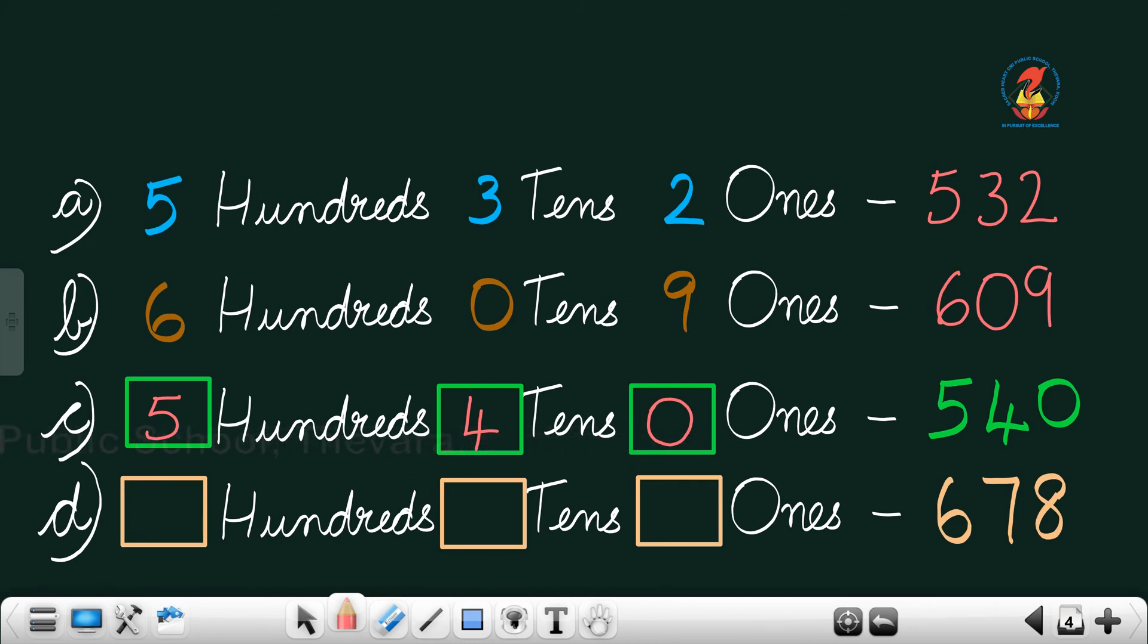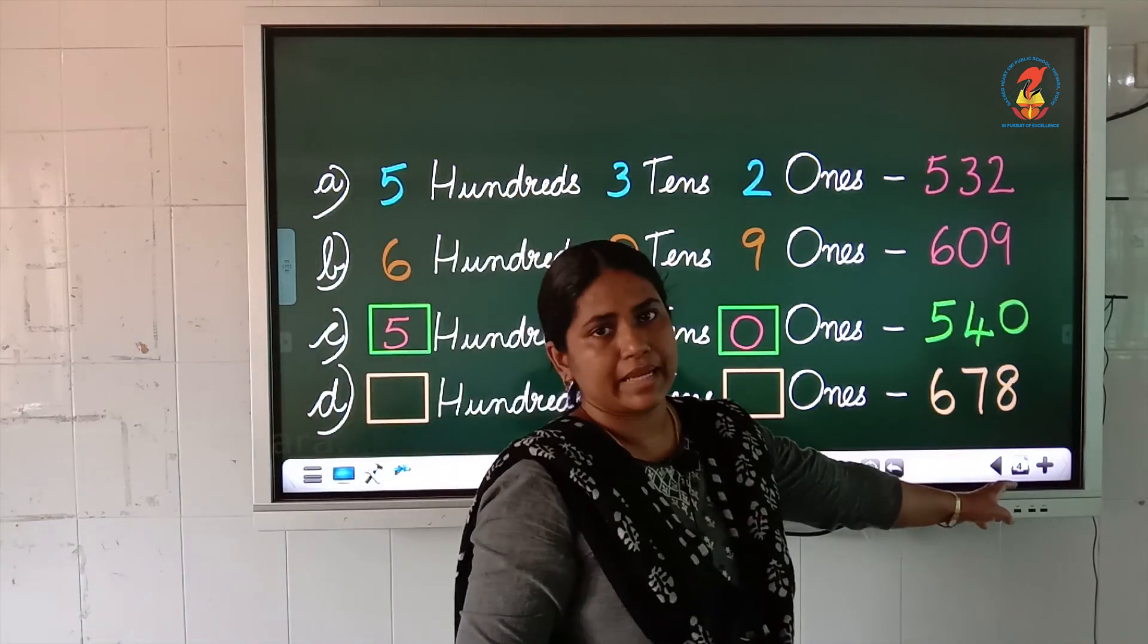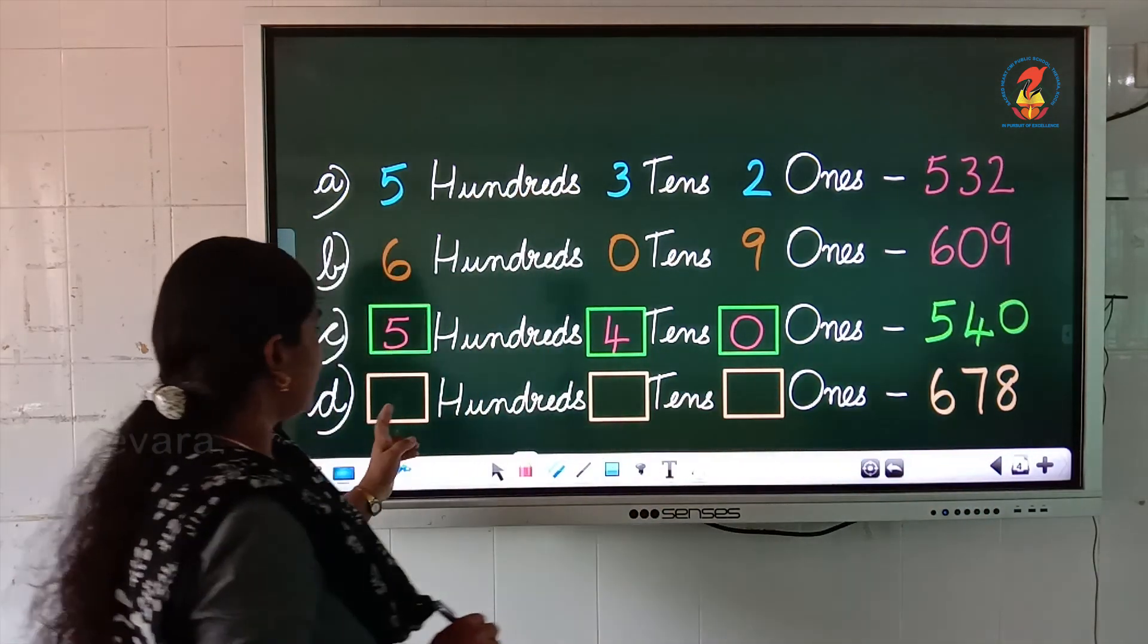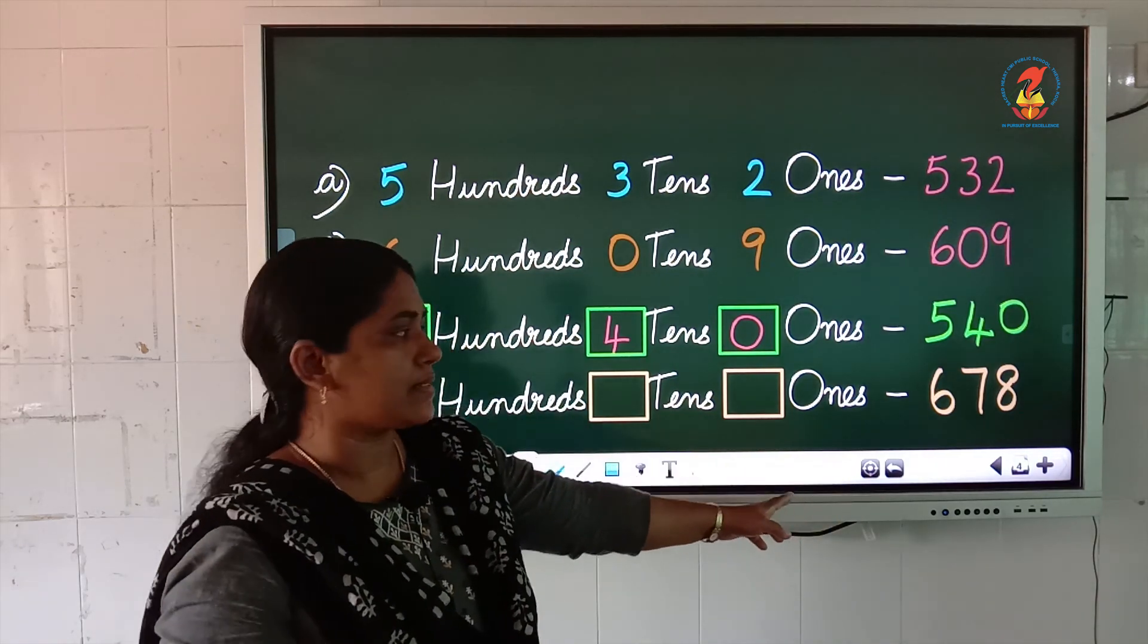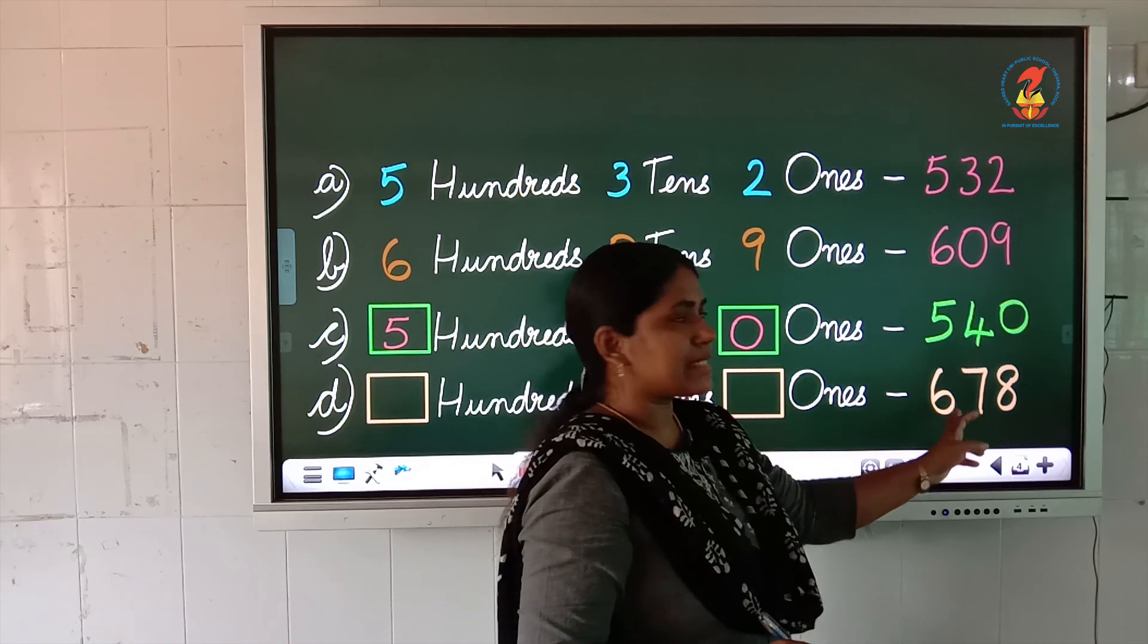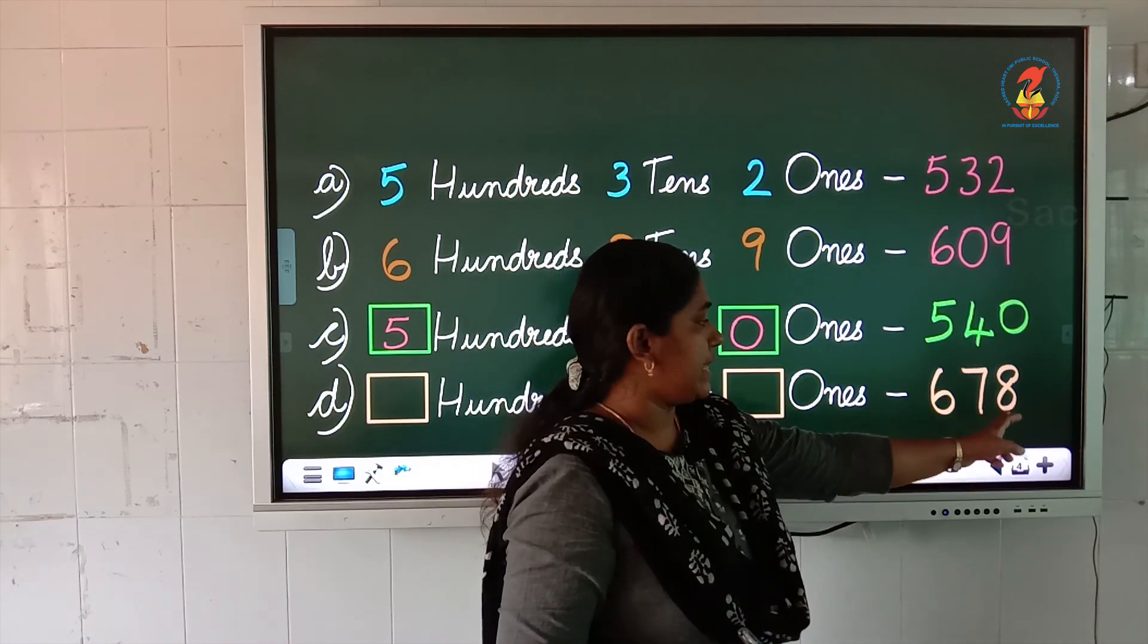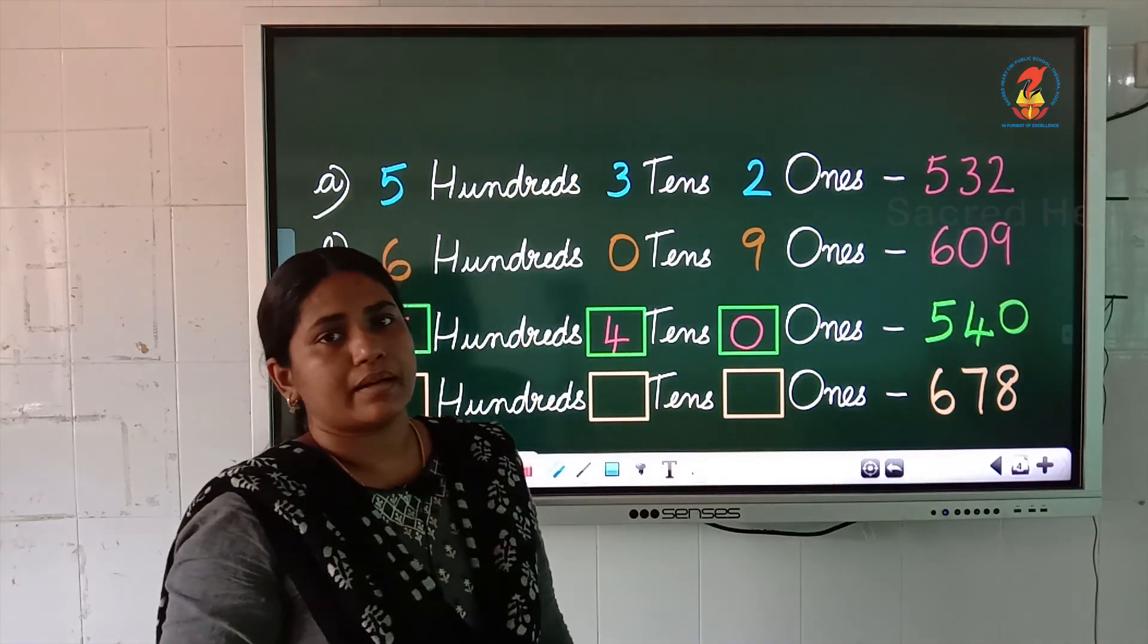Now, next question. The same way the number is given here. You have to fill the boxes, the expanded form. How many 100s, how many 10s and how many 1s are there? The question is 678.